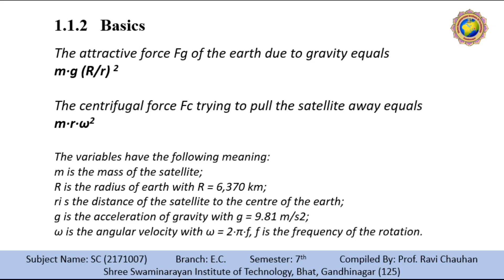The centrifugal force Fc trying to pull the satellite away equals m · r · ω². The variables are: m is the mass of the satellite; R is the radius of the earth, approximately 6,370 km; r (small r) is the distance of the satellite to the center of the earth; g is the acceleration of gravity at 9.81 m/s²; and ω is angular velocity where ω = 2πf and f is the frequency of rotation.